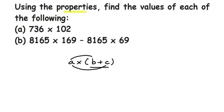You have to open the bracket: a will get multiplied with b, and then a will also multiply with c, and then you add them. First you multiply a and b, then put the plus sign in between, and multiply a with c — that is a × c. This is called the distributive property.